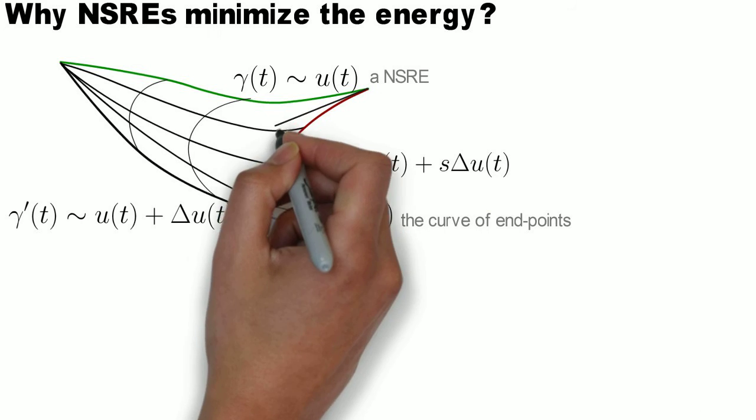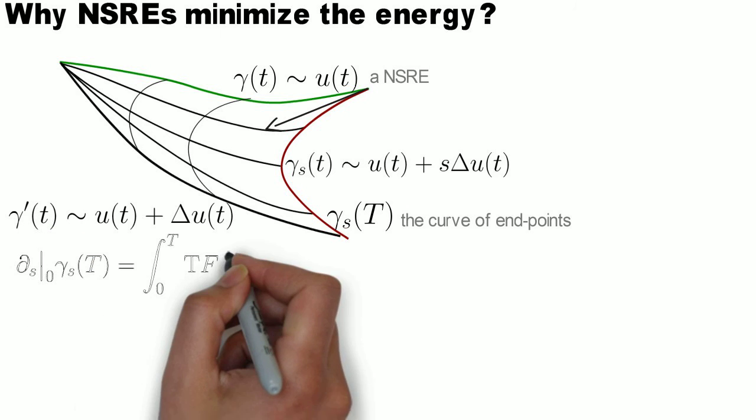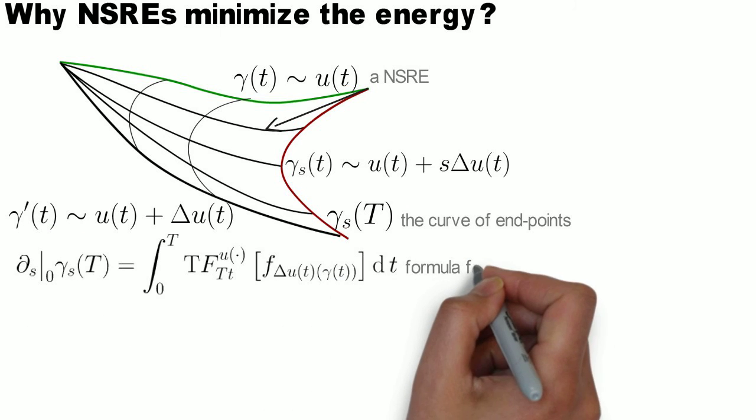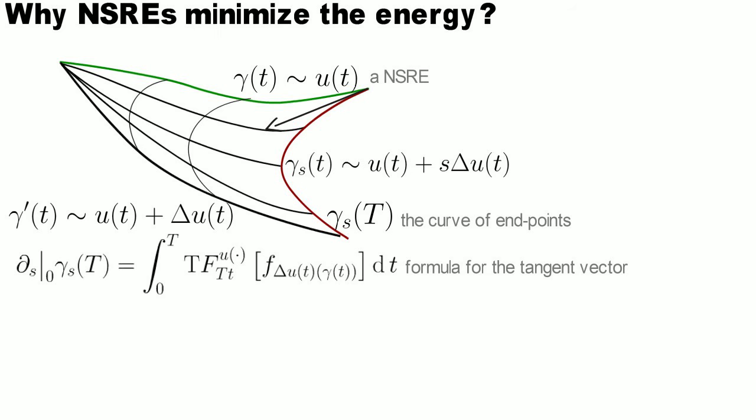We concentrate our attention on the curve of endpoints of this homotopy. In particular we can find an analytical expression for the tangent vector of this curve attached to the point gamma of t.